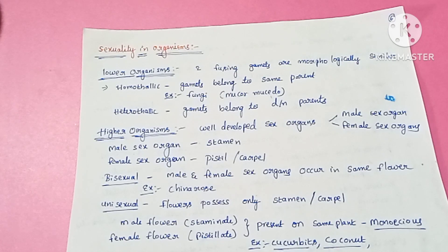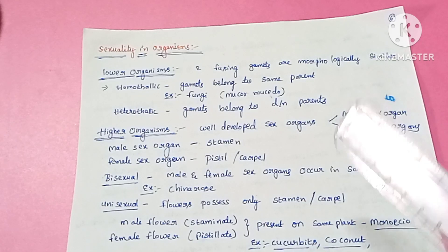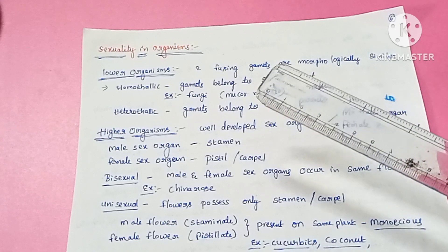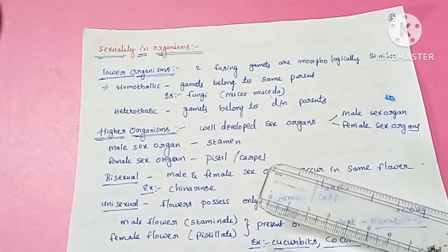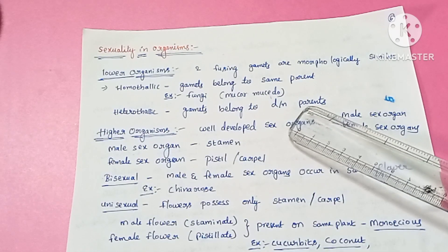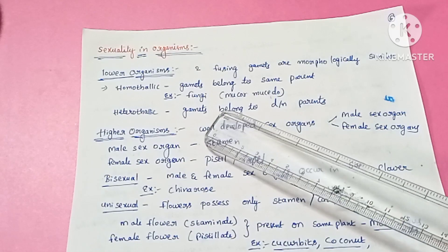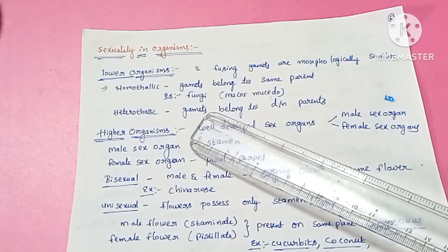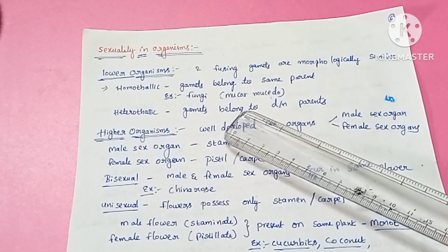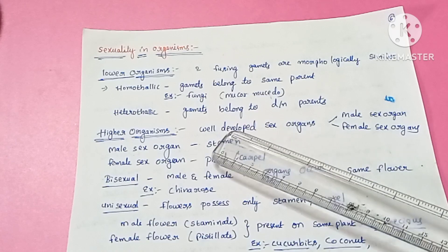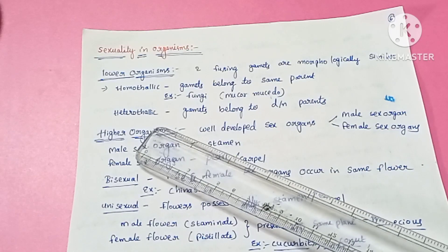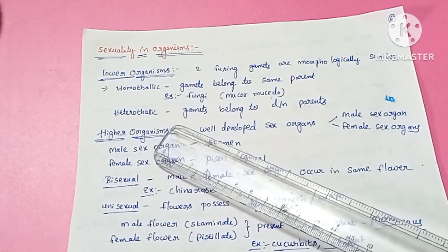Sexuality in organisms — we see this in lower organisms. In most lower sexually reproducing organisms, two fusing gametes are morphologically similar. If the gametes belong to the same parent, that condition is called homothalic. An example of the homothalic condition is fungi — specifically Mucor. If these gametes belong to different parents, then those organisms are called heterothalic.